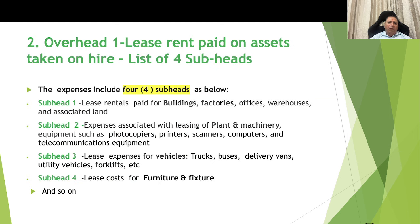Overhead number 1: lease rent paid on assets taken on hire — list of 4 subheads. Subhead 1 is the lease rental paid for buildings, factories, offices, warehouses, and associated land. Subhead 2 covers expenses associated with the leasing of plant and machinery equipment such as photocopiers, printers, scanners, computers, and telecommunication equipment. Subhead 3 is lease expenses on vehicles like trucks, buses, delivery vans, utility vehicles, and forklifts. Subhead 4 is the lease cost for furniture and fixtures which are leased out.